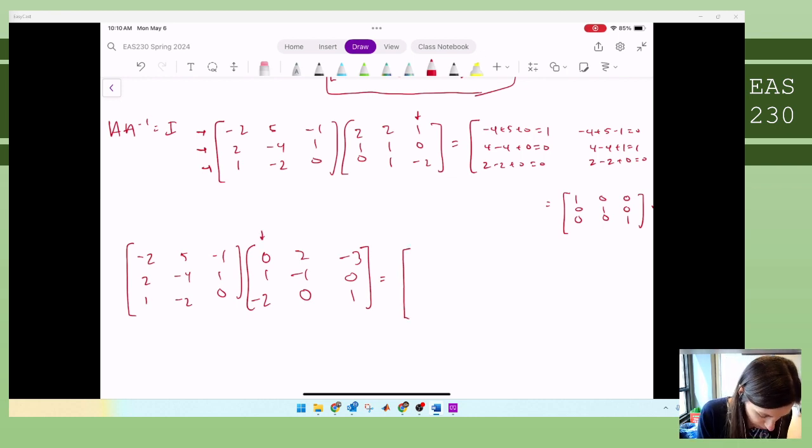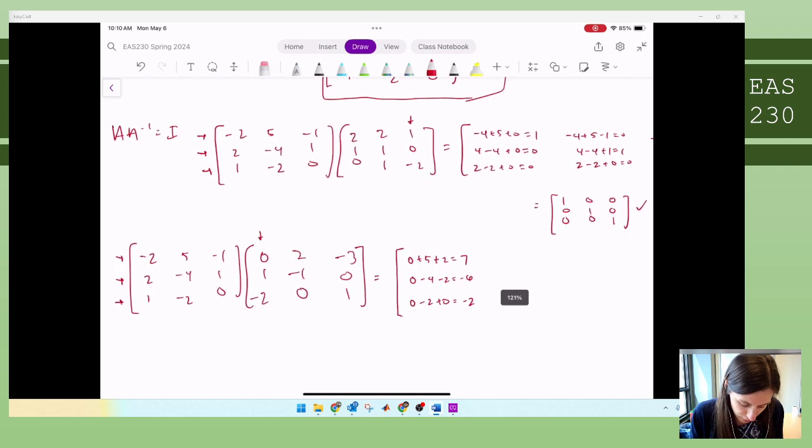Column one, row one, zero plus five plus two equals seven. Row two, zero minus four minus two equals negative six. We don't know what to expect here this time. It's not supposed to be identity. It's supposed to be whatever. So hopefully you do your math correct. Here it's zero minus two plus zero equals negative two. There we go. There's my first set of X values.